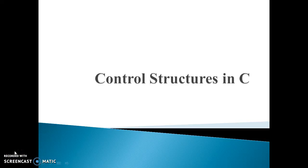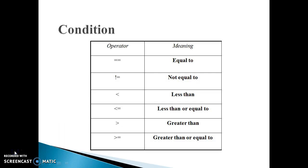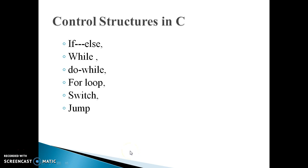Hello, welcome to this lecture on control structures in C. Until now we have studied condition operators used for checking variables: equal to, not equal to, less than, less than or equal to, greater than, greater than or equal to. In this lecture we will see control structures in C like if-else, while, do-while, for, switch, and jump statements — all used for condition checking.